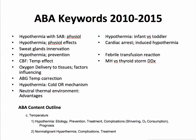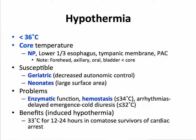Why do kids get colder than mid-aged adult patients? What about the use of cooling patients after cardiac arrest — is that beneficial? And then some causes of hyperthermia, but the main content is on hypothermia. You can see from the ABA content outline: hypothermia, the etiology, prevention, treatment, complications like shivering, and the effect on oxygen consumption, and then a little bit on hyperthermia — non-malignant, not MH. So let's look at the hypothermia and spend most of our time on that.